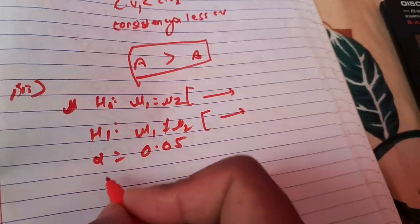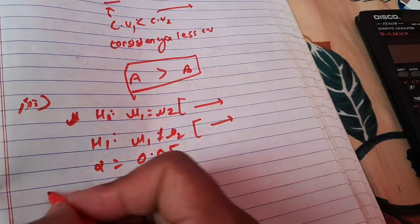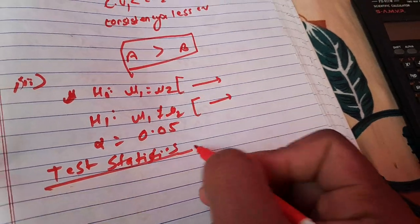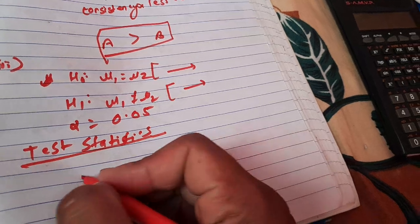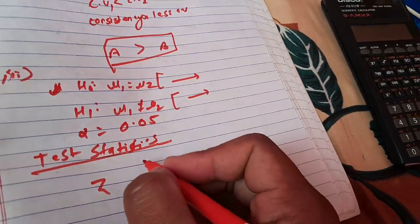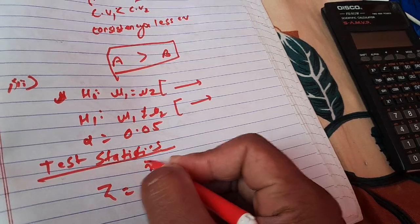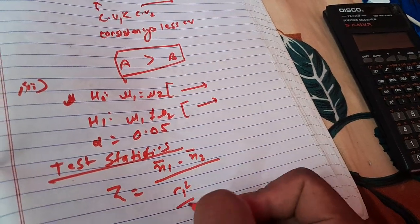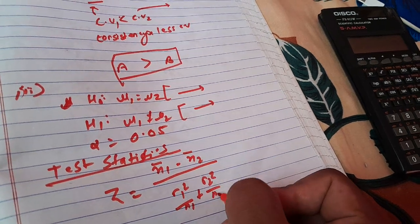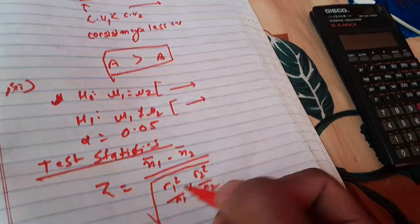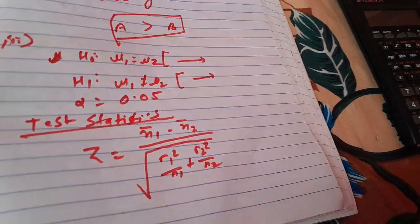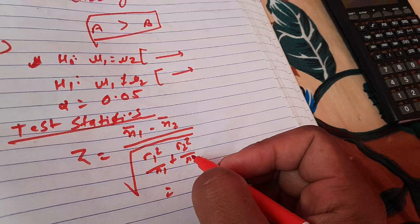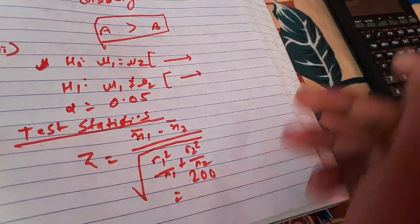We calculate the test statistic. The Z-test formula for the difference between two means is: Z = (x̄1 − x̄2) / √(σ1² / n1 + σ2² / n2). We substitute the values: x̄1 = 200, x̄2 = 220, σ1 = 25, σ2 = 30, n1 = 120, n2 = 100.